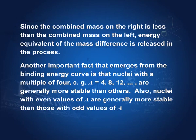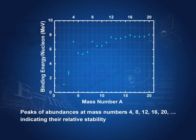Another important feature from the binding energy curve is that nuclei with mass numbers that are multiples of 4 — such as 4, 8, 12, 16, and 20 — are generally more stable than their neighbors. This is visible in the graph where peaks appear at these mass numbers compared to the surrounding ones.